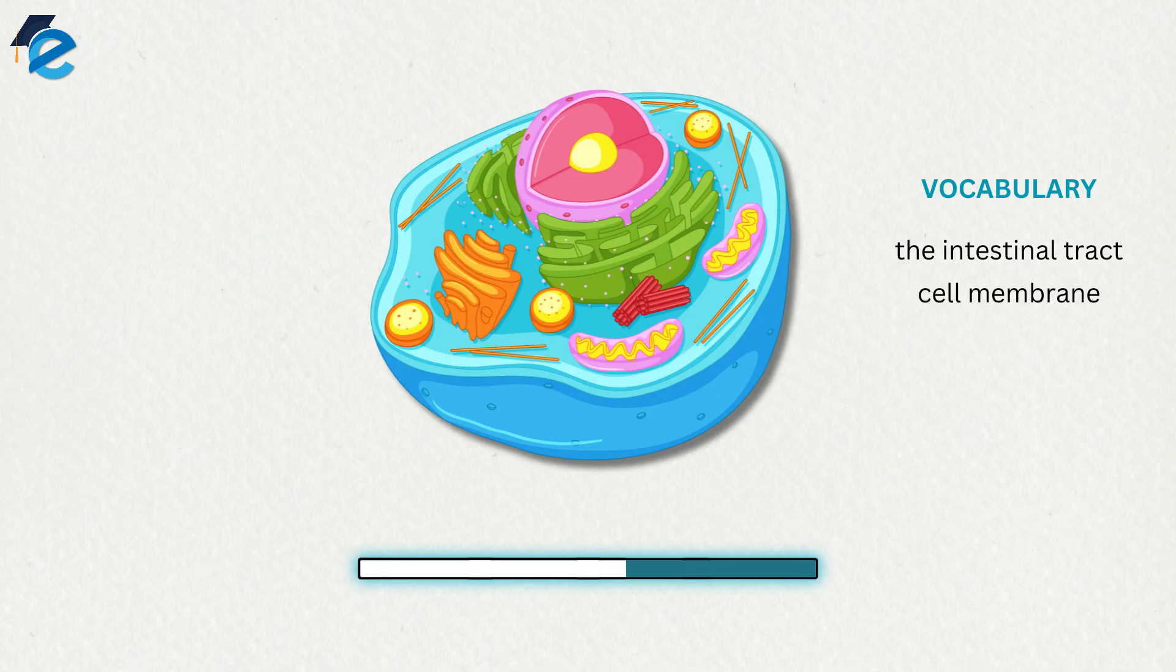Cells have a cell membrane, also referred to as the plasma membrane, that keeps the intracellular environment, the fluids and organelles, separate from the extracellular environment. Blood vessels keep blood inside a closed circulatory system, and nerves and muscles are wrapped in connective tissue sheaths that separate them from surrounding structures.